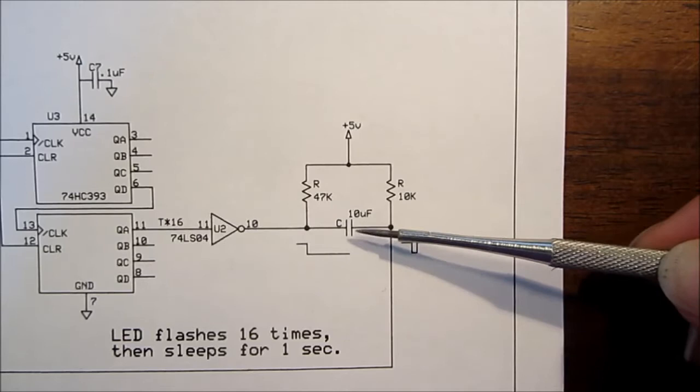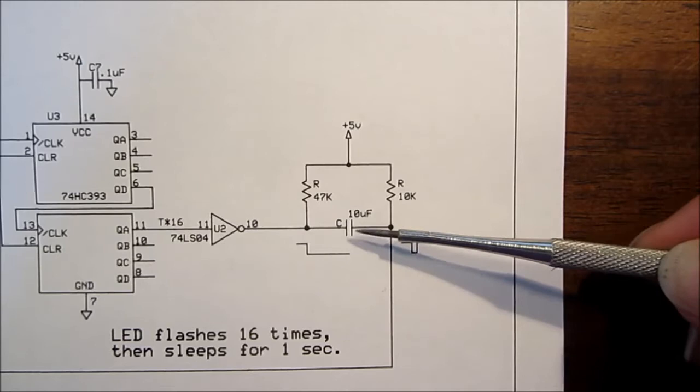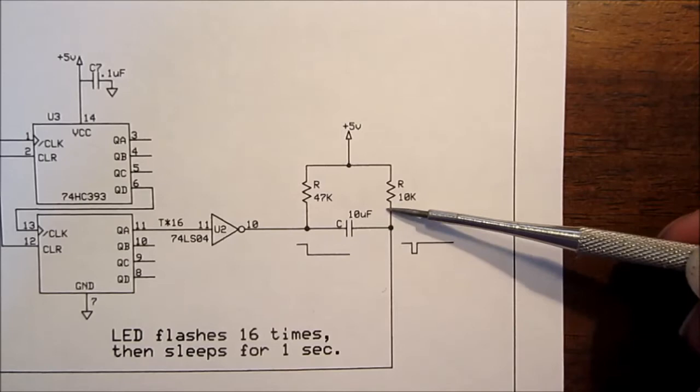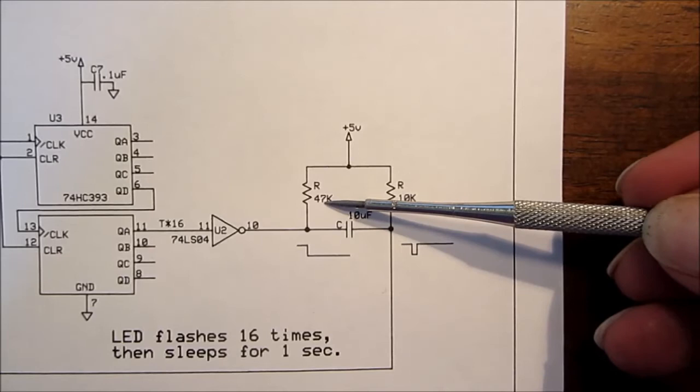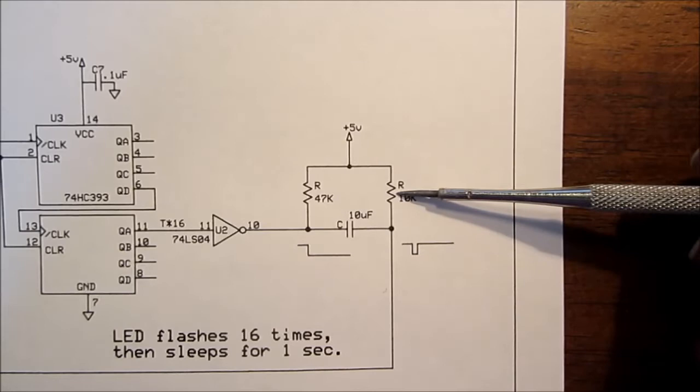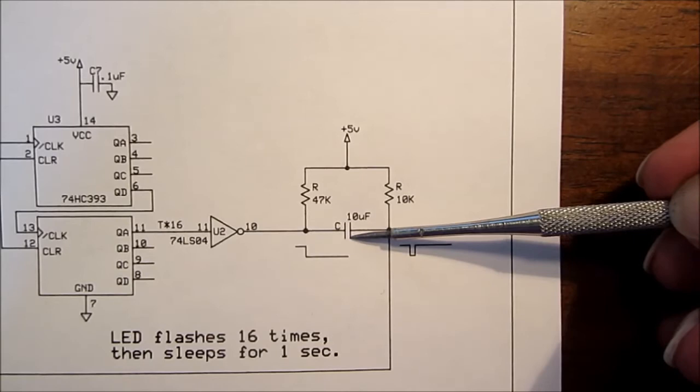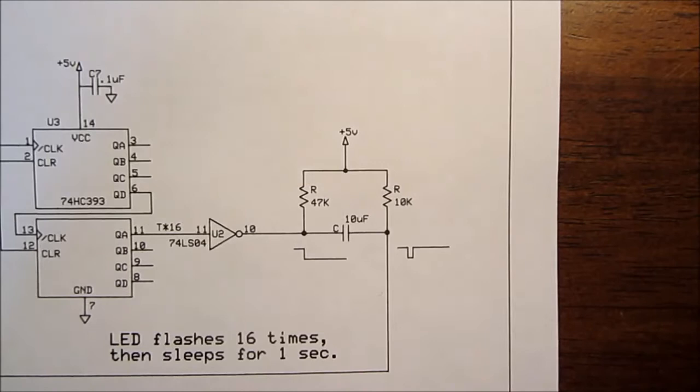So again we have a signal going high here which is our sleep control bit going low on this side of the inverter. And then this capacitor here blocks that original signal from going all the way through and over to the trigger. And with this configuration we have a 47K resistor here and a 10K resistor here. This 10K resistor is really just acting as a pull up for the trigger input. So it could be probably any value here that's not real critical.